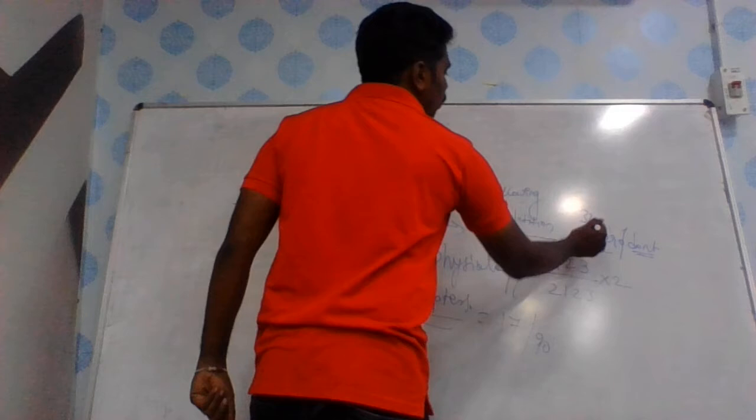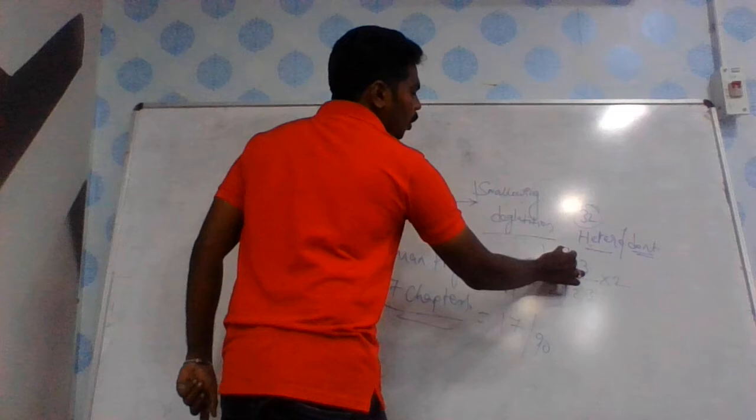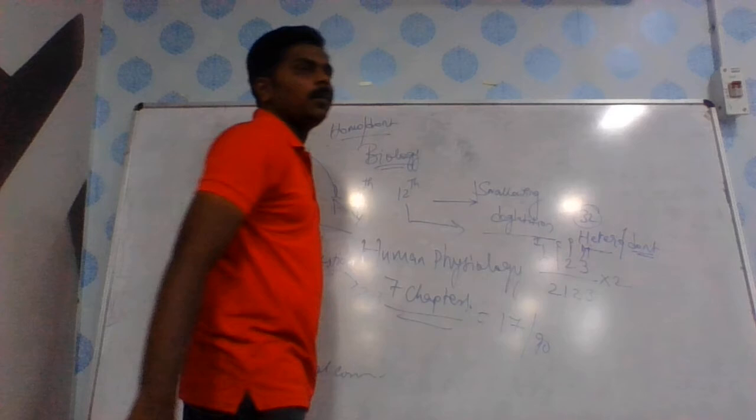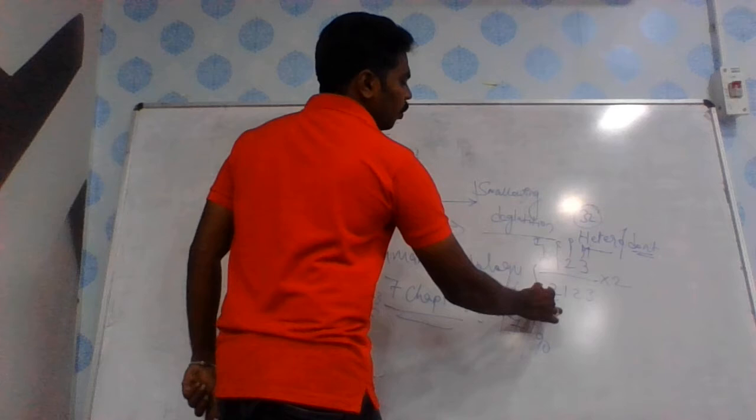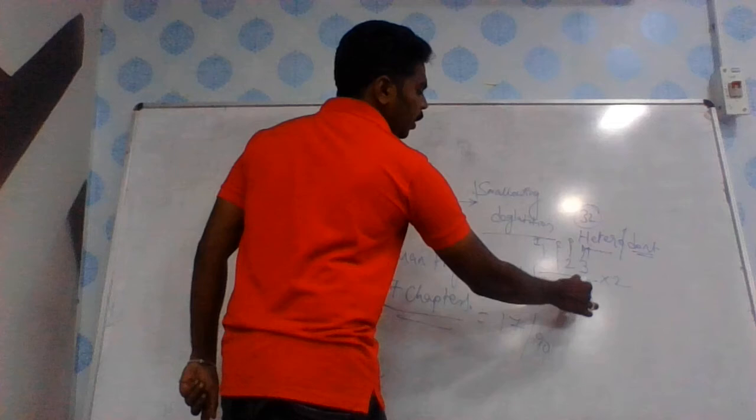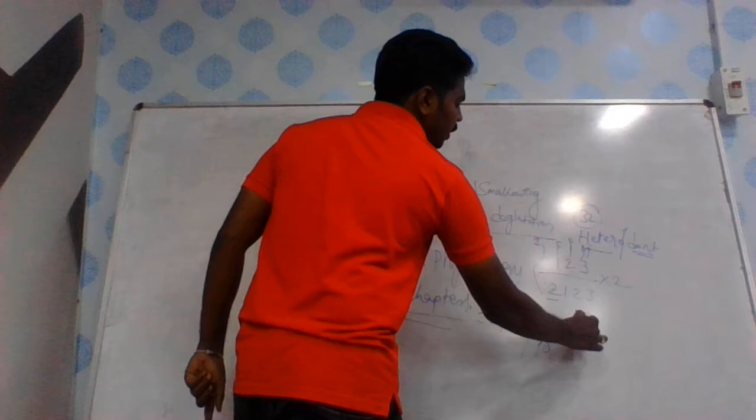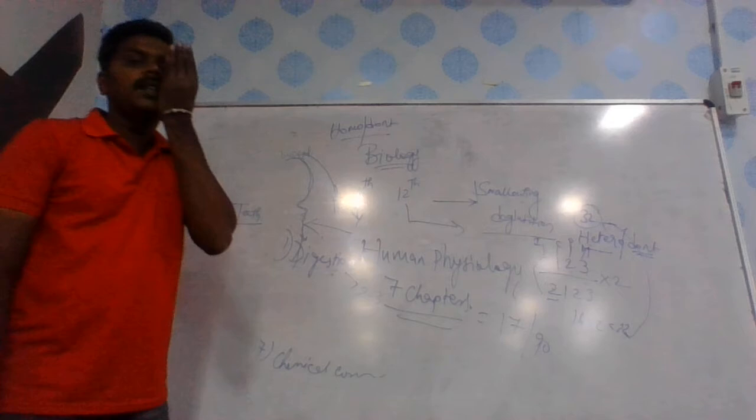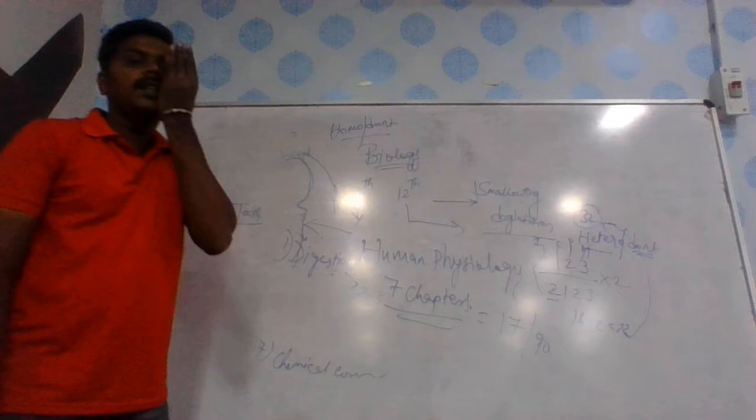That is called heterodont. Total 32 - incisors, canines, premolars, molars. 8 incisors, 4 canines, 8 premolars, 12 molars. We have 16 teeth on top, 16 on bottom. This last one is wisdom tooth.